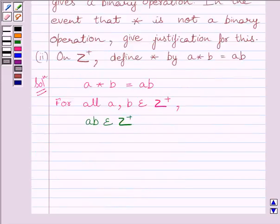As we know, product of positive integers is a positive integer only. So we can write, therefore, star is a binary operation on Z plus.